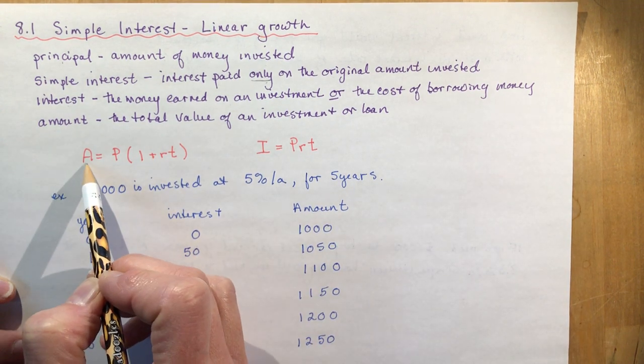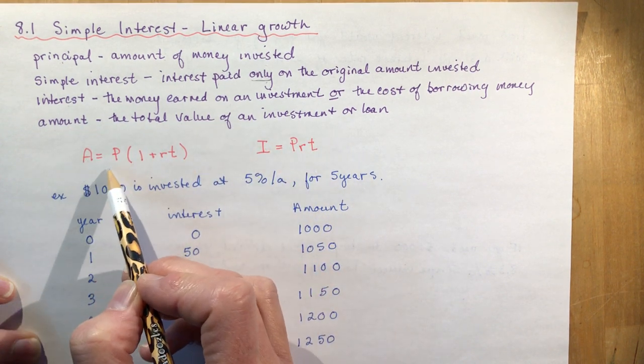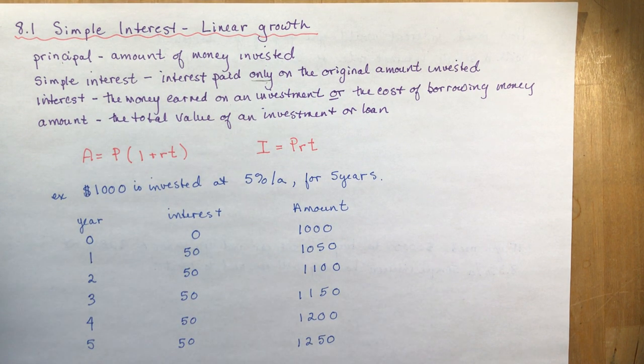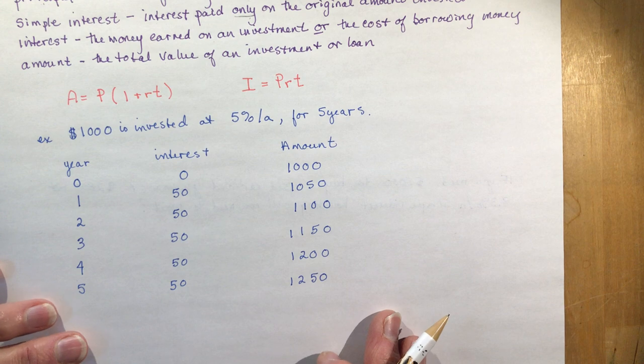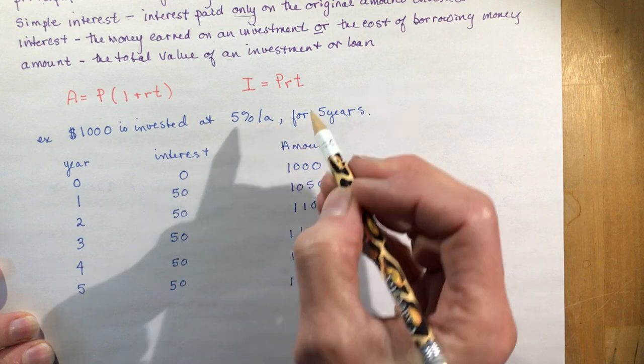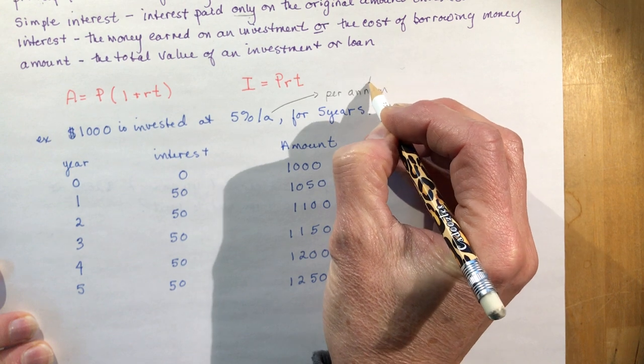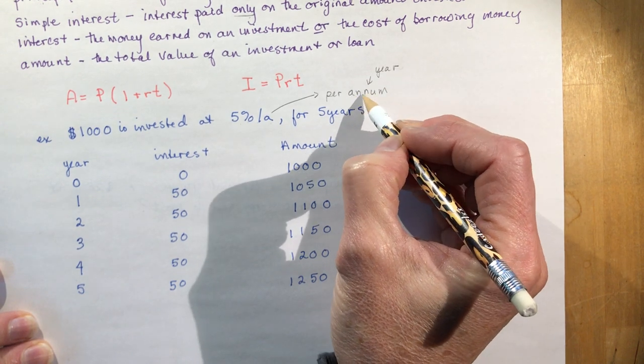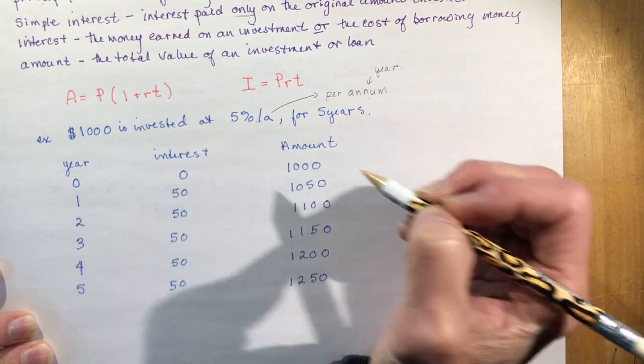The amount, capital A in the equations, refers to the total value of the investment or loan after you've done your calculation. The first example: I have $1,000, I put it in the bank and I'm investing it at 5%. This line means per and the A stands for annum. So this means per annum, which is year. One year is one annum or annually, per annum for five years.